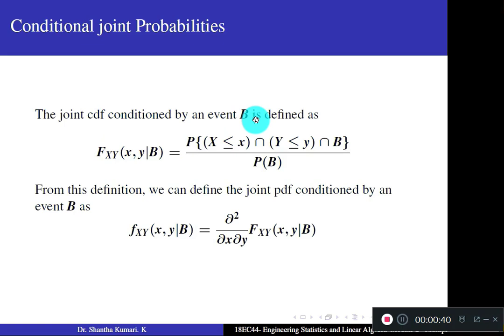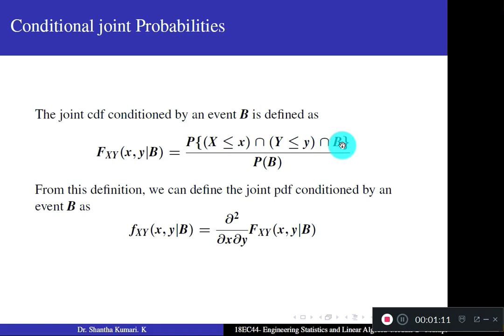If you have a condition B — an event B which is a condition — then the conditional CDF for X and Y is given by this notation: F_XY(x, y | B). This equals the probability of the intersection of events X ≤ x and Y ≤ y, intersected with B, divided by the probability of B. This formula is similar to P(A ∩ B) / P(B), the standard conditional probability formula.